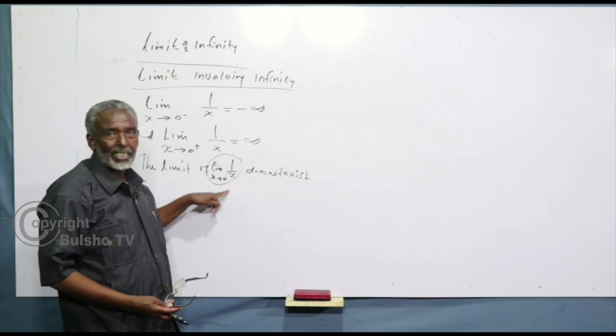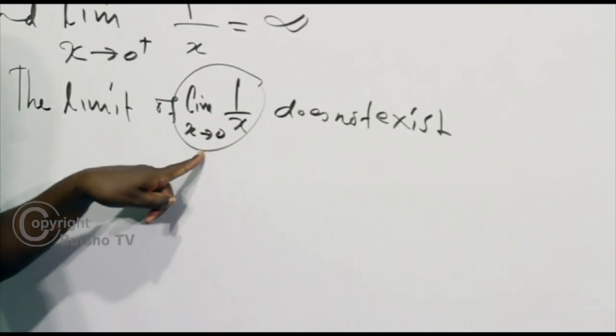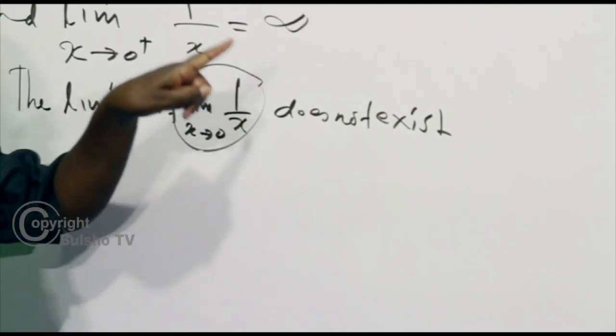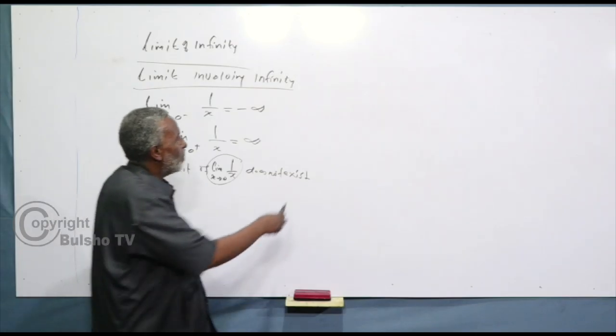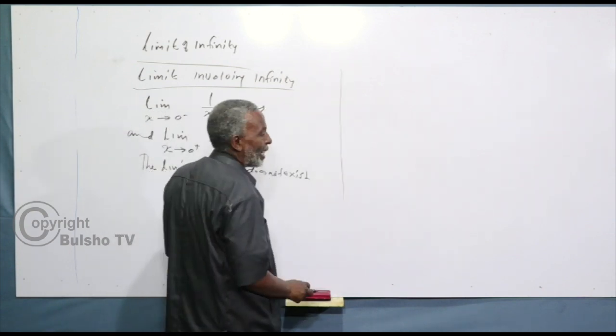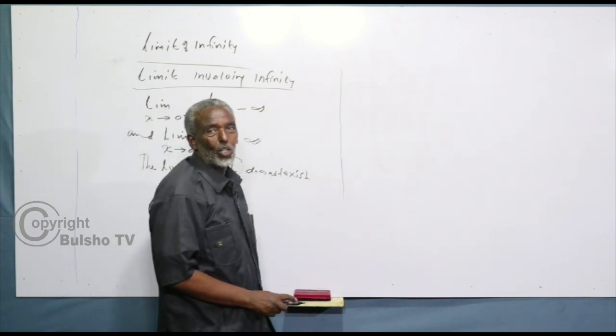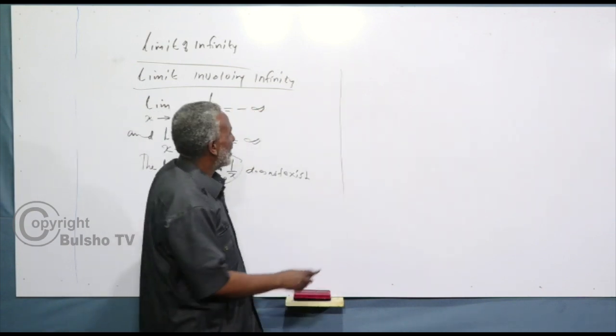Why? But from the graph we already know: 1 over x. The limit as x approaches 0 does not exist. Why? But the graph we already know — 1 over x.